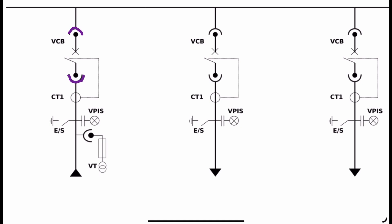Since it is a withdrawable-type circuit breaker, it can be removed whenever necessary — for example during maintenance. This is also the reason why you will find there is no disconnector used in this single line diagram. When you remove the withdrawable circuit breaker, you have a visible isolation that the human eye can see — and that is why a disconnector is not necessary. But if it were a fixed-type circuit breaker, it would be good to have a disconnector for visible isolation.